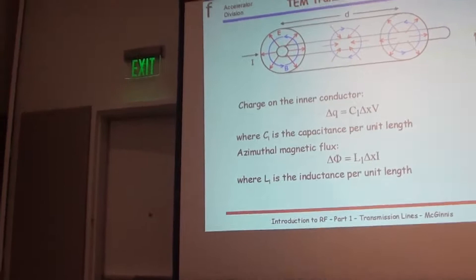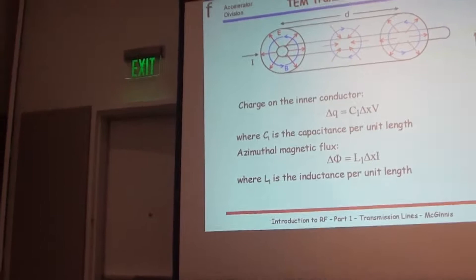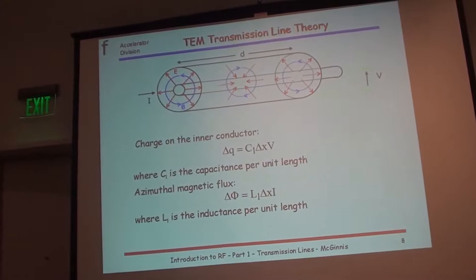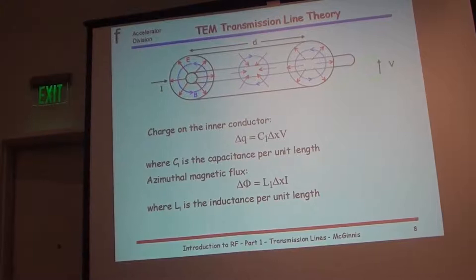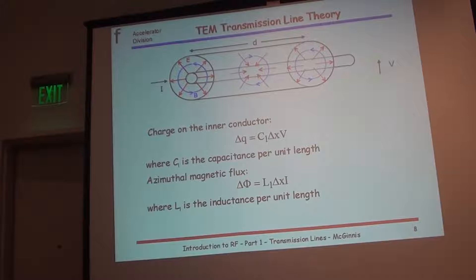Now we're going to talk about transmission lines. What everybody's seen is the coaxial cable coming out of your wall — that's the most common example. In accelerator work we also know waveguides, twisted pairs, and all sorts of other transmission lines. We're going to use a coaxial line because we'll be seeing it in the lab — it's easy to work with and easy to understand.